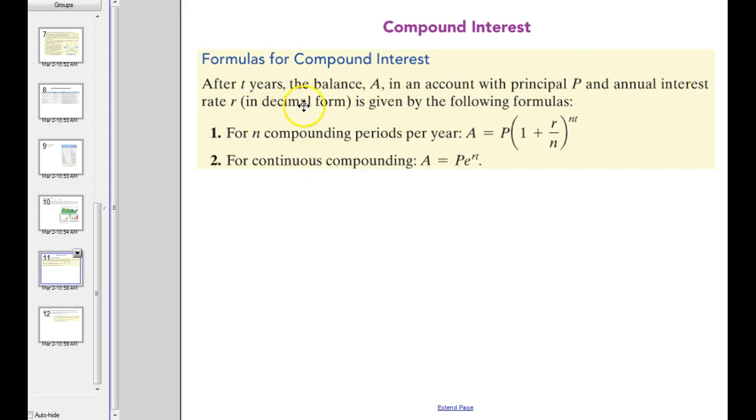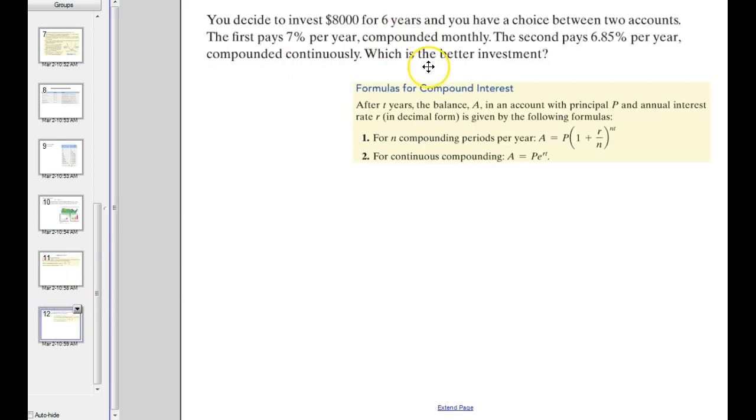All right, but anyway, these are the two formulas we use when we see compound interest being used. So here's a problem that involves compound interest. We got eight grand. We're going to invest it for six years, and we could go into either of these two accounts. This one pays 7% per year compounded monthly, which means N would be 12, because there's 12 months in a year. The second pays this percentage compounded continuously, which is the better investment.